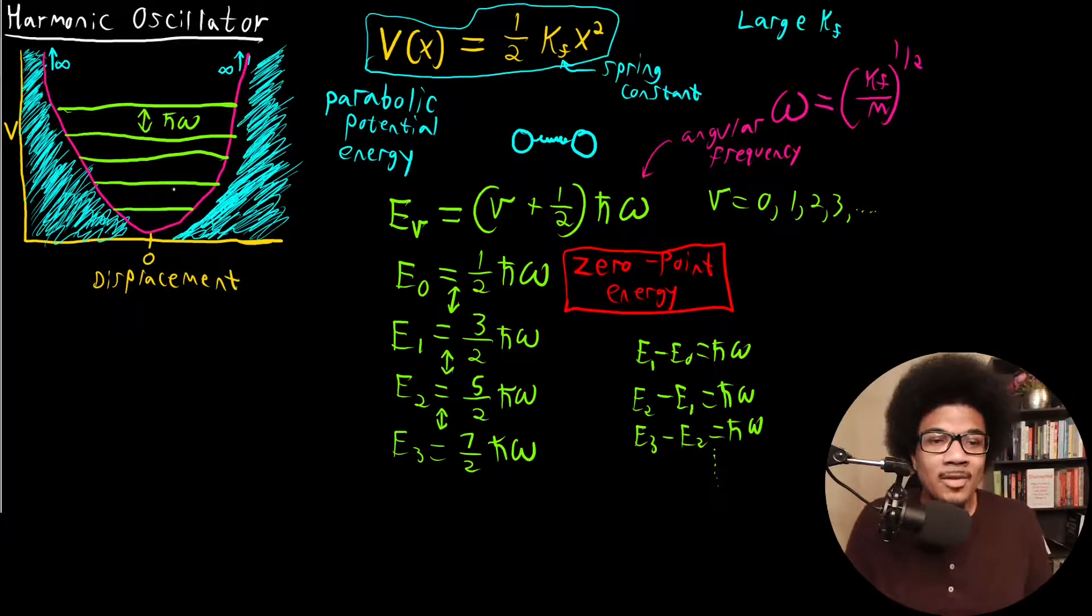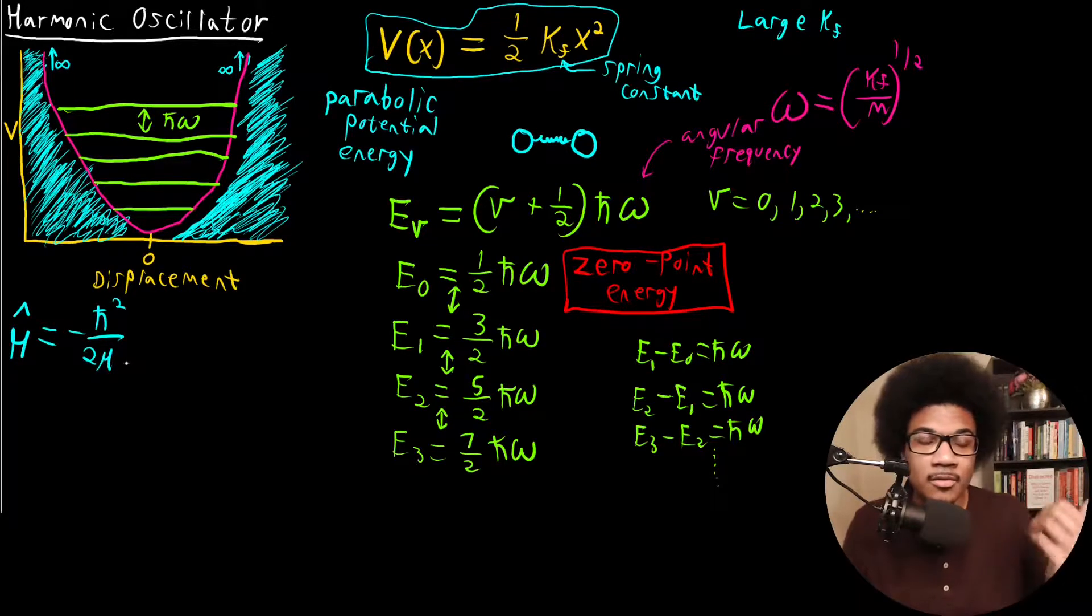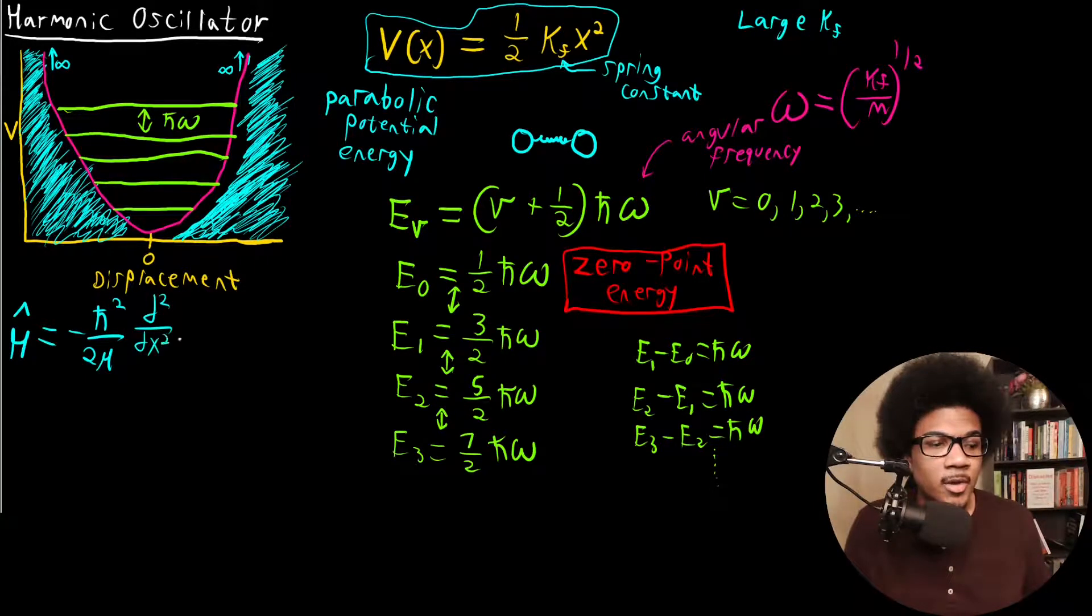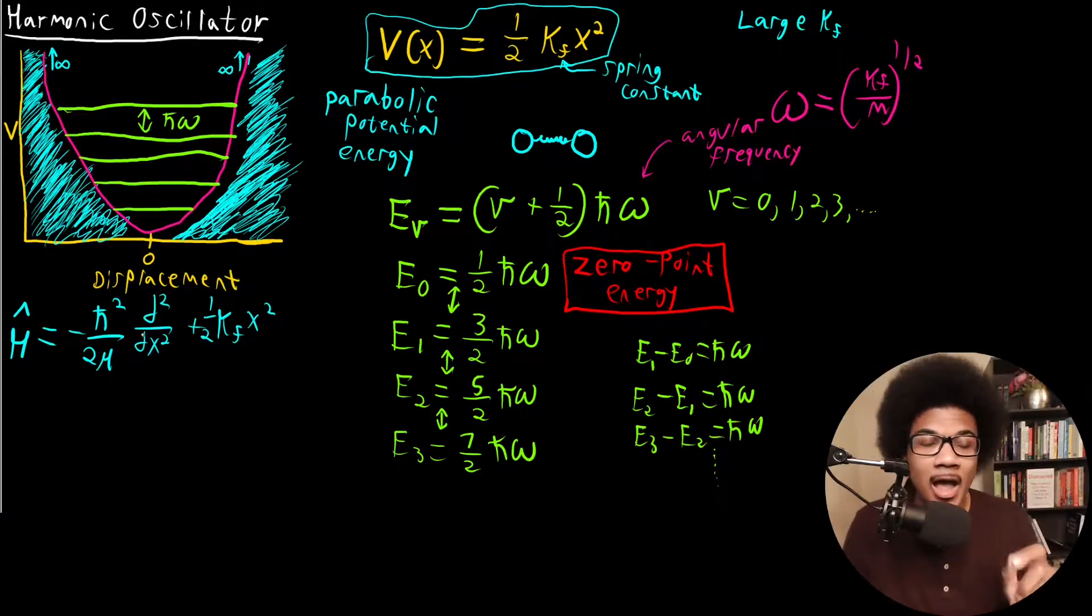Okay. So we have our potential, we have our energy. Let's discuss the Hamiltonian really quick. So the Hamiltonian for the quantum harmonic oscillator, it's going to be -ℏ²/(2μ) d²/dx² plus 1/2 K_f x², where μ is the reduced mass, which we just had a full video on. So we have our kinetic energy operator here, which is very similar to a free particle, except instead of using the mass of the particle, we're using the reduced mass of our oscillator. And then the second term is just the potential, which we've just talked about here.